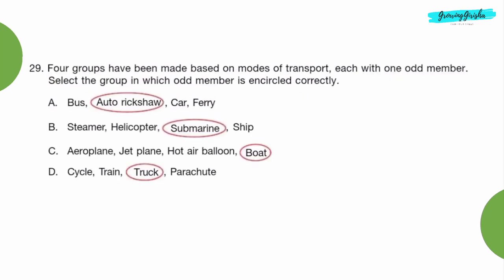Question 29: Four groups have been made based on modes of transport, each with one odd member. Select the group in which odd member is encircled correctly. Option C.